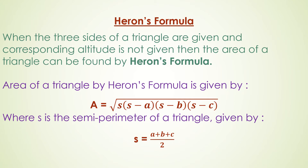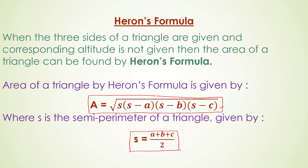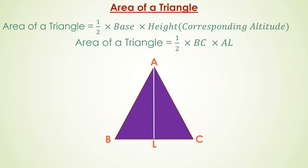In the previous class, we discussed the concept of Heron's formula, which is given by A equals the square root of S(S−a)(S−b)(S−c), where S is the semi-perimeter given by S = (a + b + c) / 2. We also have the area of a triangle as half of base into height, where the base is BC and the corresponding altitude is AL, so area = (1/2) × BC × AL.